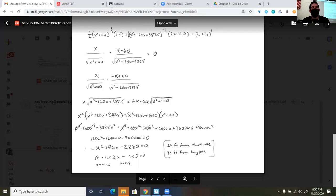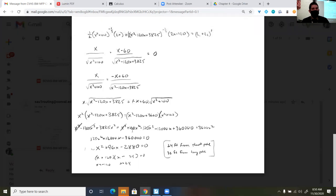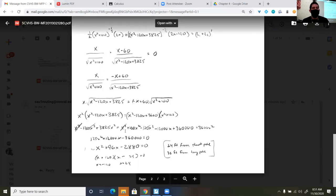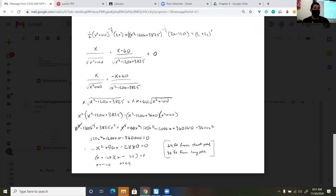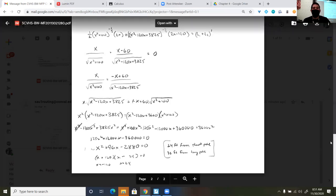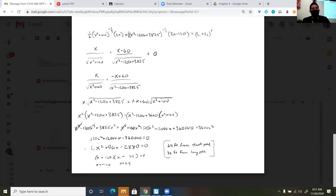Then I went through and I distributed. So once I distributed, you should notice that some of your terms cancel out. And then you get this 125x squared plus 12,000x minus 360,000. Set that equal to 0. 125 goes into each term. So I was able to reduce this quadratic.